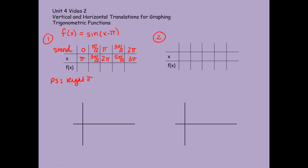So my graph that once began at 0 and ended at 2 pi is now going to begin at pi and end at 3 pi. It still has the same period — it still lasts for 2 pi — but it starts at pi and ends at 3 pi. Remember this graph is continuous and goes on forever in the x direction, but we're only going to graph one period. Since my y values didn't change and we know sine goes 0, 1, 0, negative 1, 0, those values stay the same. So I'm going to highlight the points we're actually going to graph.